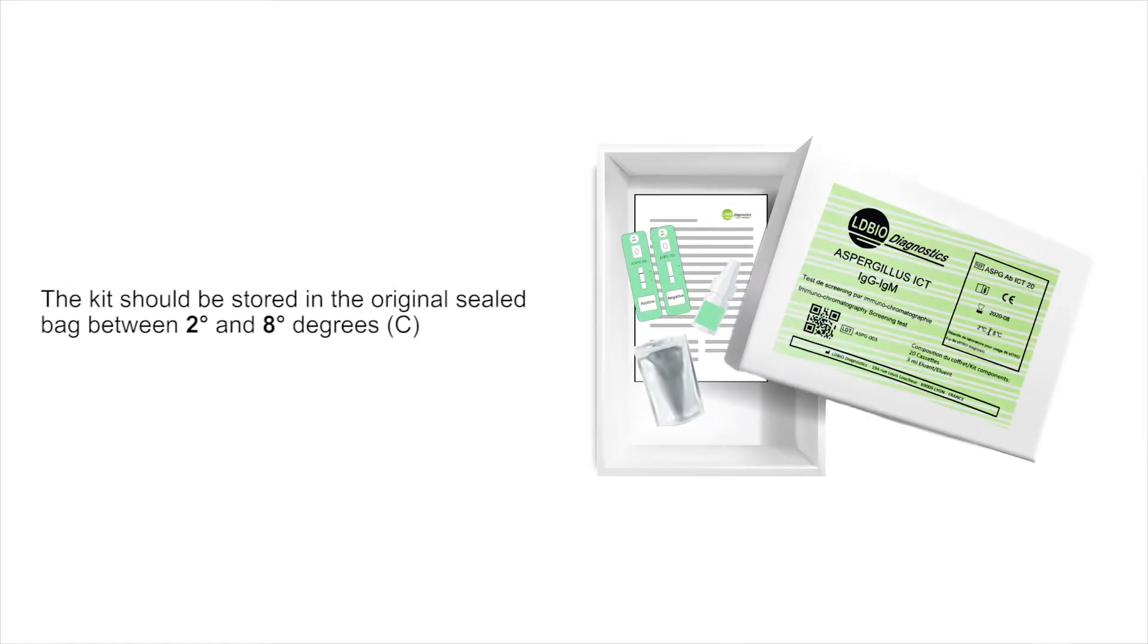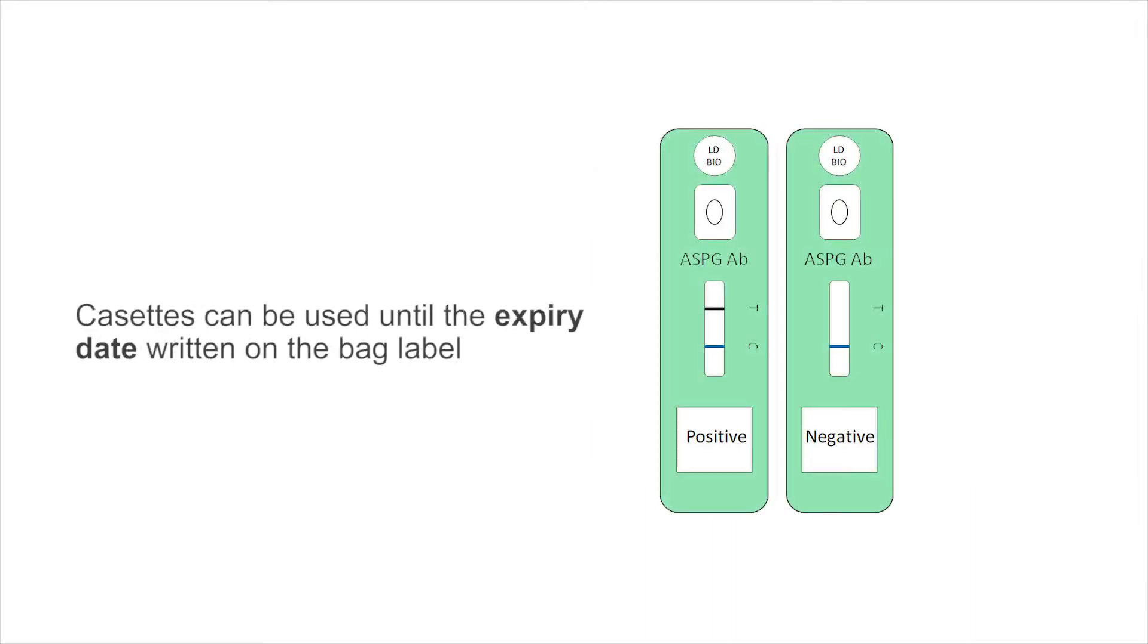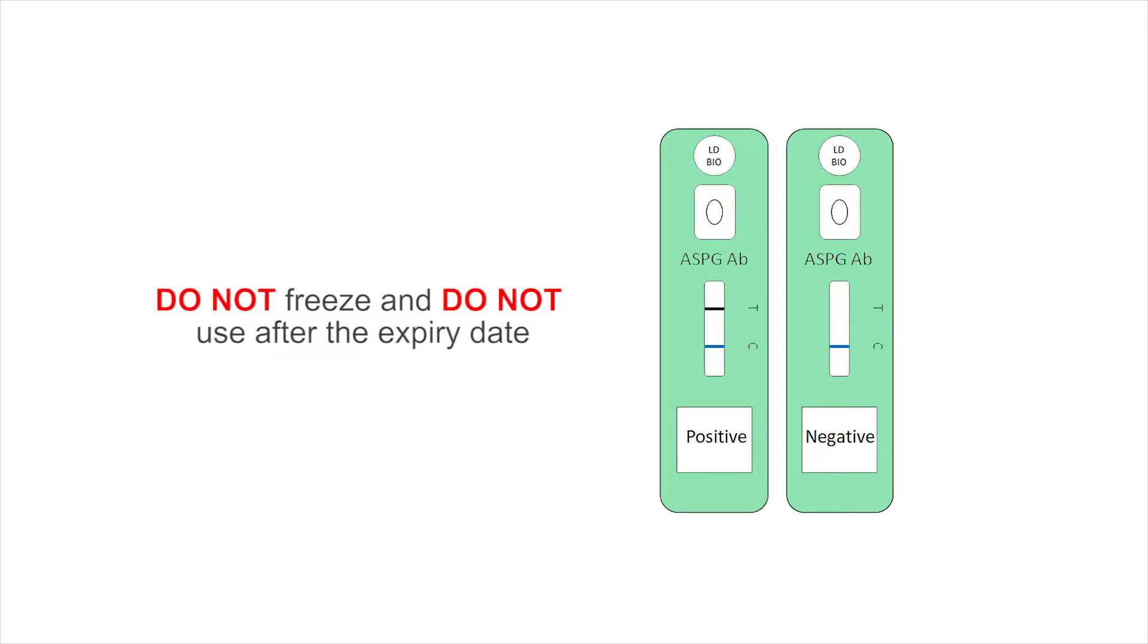The kit should be stored in the original sealed bag between 2 and 8 degrees Celsius. Cassettes can be used until the expiry date written on the bag label. Do not freeze and do not use after the expiry date.